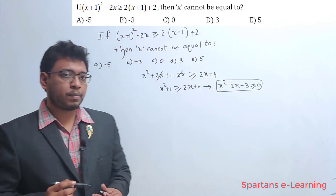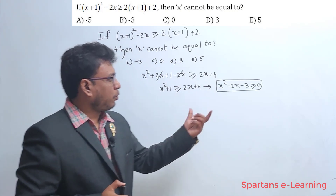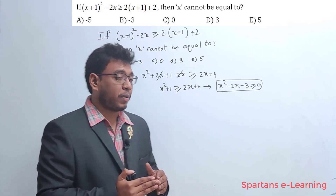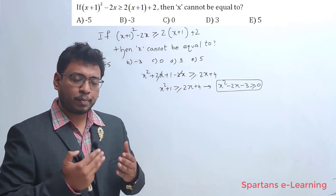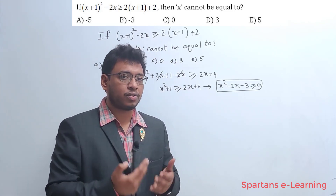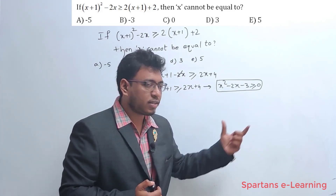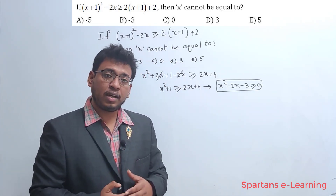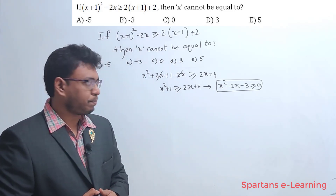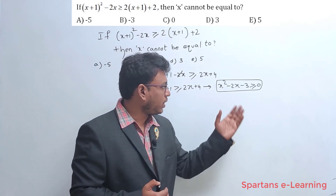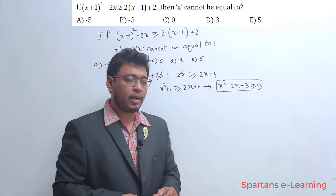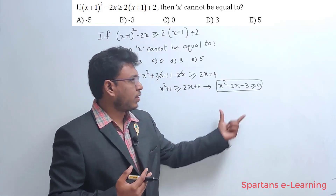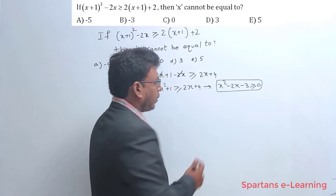Now here you should be smart enough. Whenever you see big inequalities or equalities, try to make them as perfect squares, because whenever you make something a perfect square, you are minimizing your calculations. Converting something into a perfect square is a hint. These kinds of logics we have discussed earlier in many videos across our algebra subtopics.